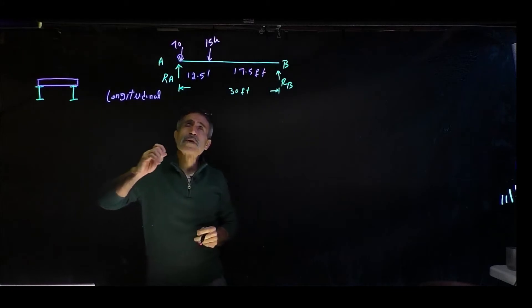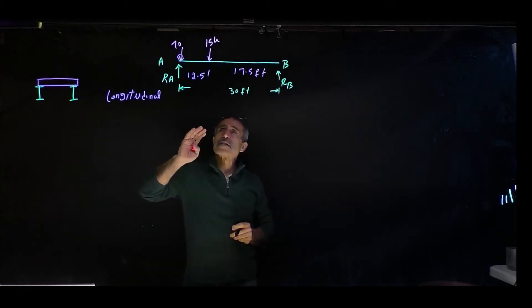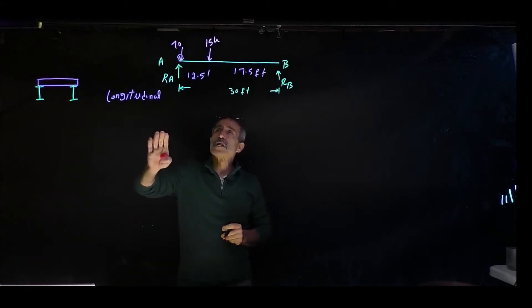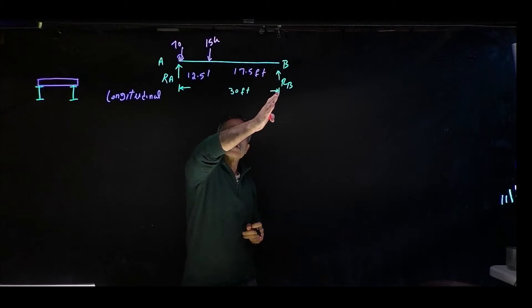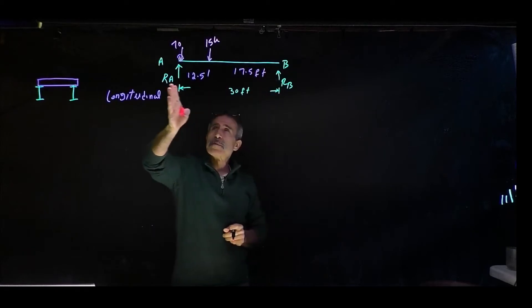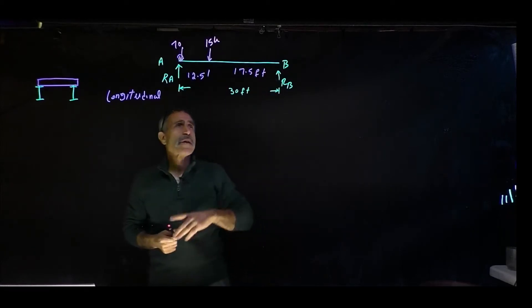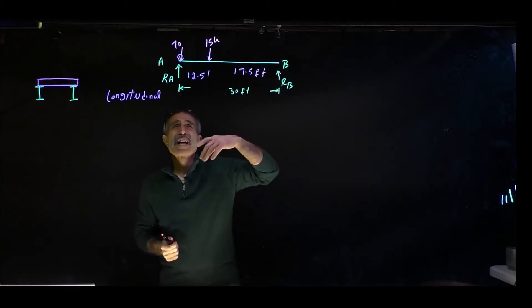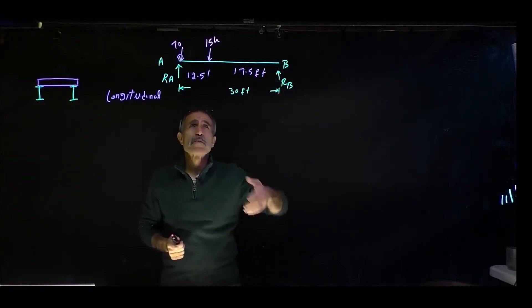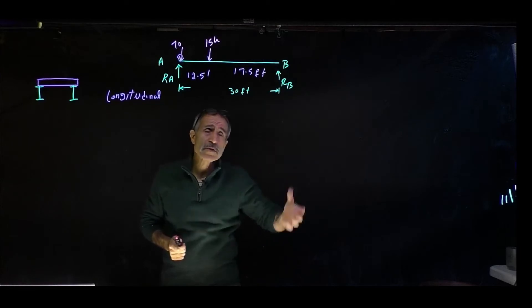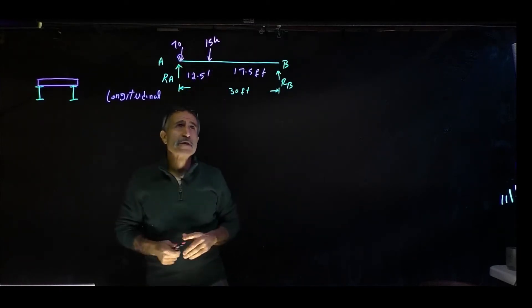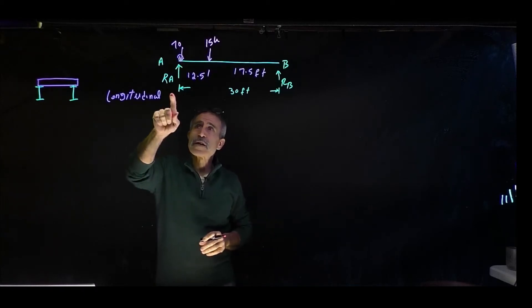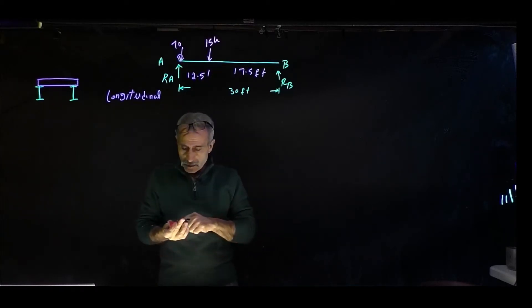We want to find the maximum shear as the loader moves along the beam. The maximum shear occurs where the reaction is greatest, and the reaction is greatest when the heaviest tire is directly on top of the reaction itself. So we don't have to search far — let's calculate.